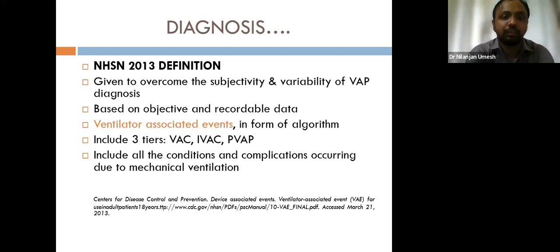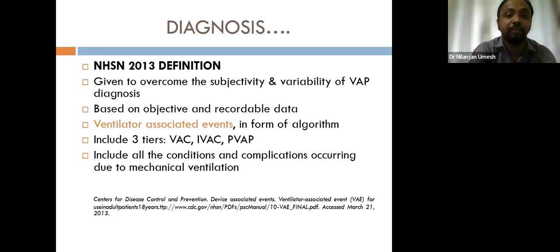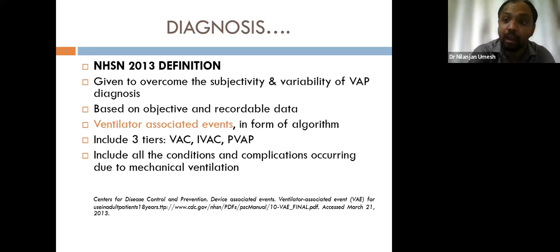The 2013 NHSN definition was introduced to overcome the subjectivity and variability of VAP diagnosis, using objective and recordable data. It classifies events as Ventilator-Associated Events in a three-tier algorithm: VAC, IVAC, and PVAP. This definition includes all conditions and complications from mechanical ventilation, not VAP alone. A key difference is that it detects all ventilator-associated complications, not only VAP, and all ventilator-associated events need not be treated.